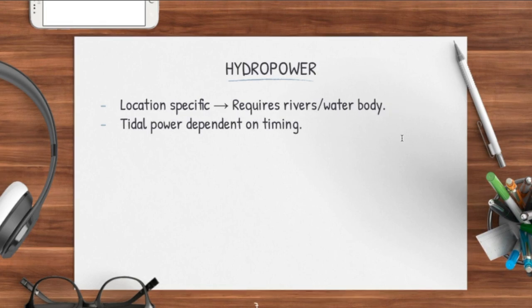Next is hydropower. Hydropower refers to energy that basically uses water to harness itself. The issue about hydropower is that it's actually location-specific and also very expensive, because you have to build a whole dam. You need a huge water body and you may have to relocate people who are living in the area — all these factors contribute to why hydropower may not be the most viable solution.